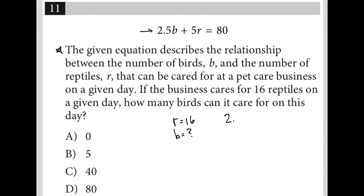I'm just going to take the equation. It's a fairly simple question. I'm going to simply plug in information from the question and have 2.5b plus 5 times 16. I can already see the answer is going to be 0 here because I know 5 times 16 is 80.